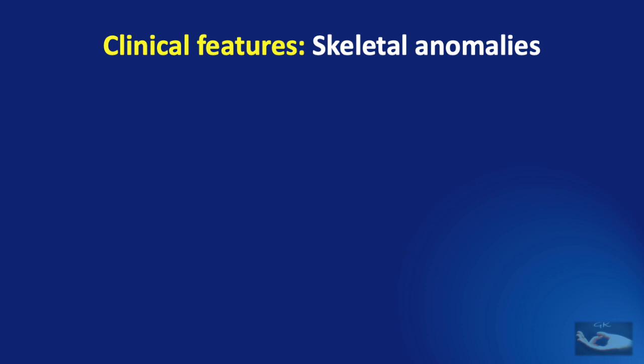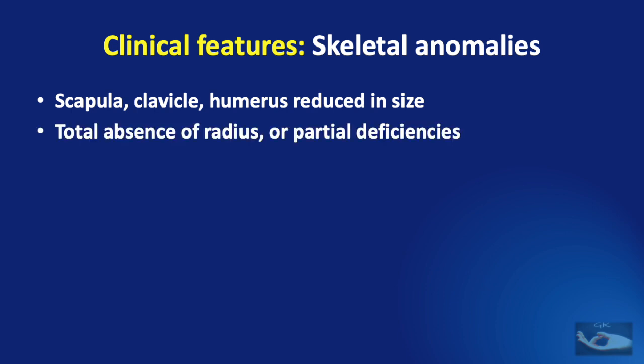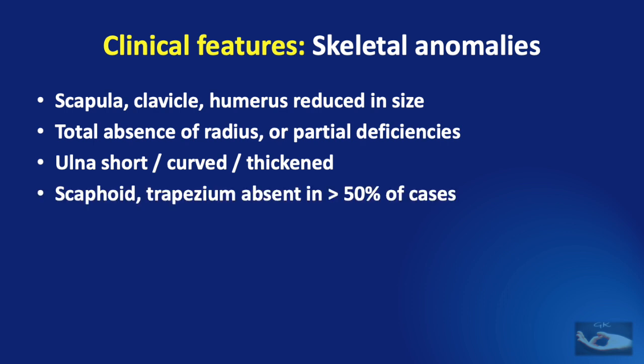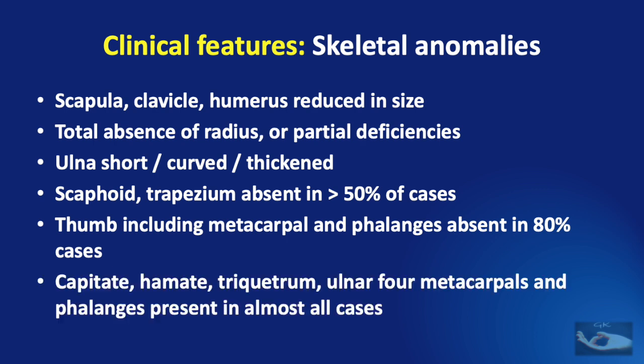Two thirds of patients with radial club hand have associated musculoskeletal anomalies. Skeletal anomalies include reduced size of the scapula, clavicle, and humerus. There may be total absence of the radius or partial deficiencies. The ulna may be short, curved, or thickened. The scaphoid and trapezium may be absent in more than 50% of cases. The thumb, including the metacarpal and phalanges, may be absent in 80% of cases. However, the capitate, hamate, triquetrum, and the ulnar four metacarpals and phalanges are present normally in almost all cases.